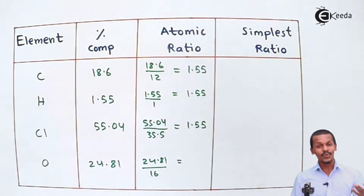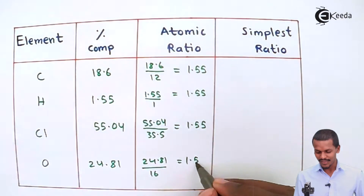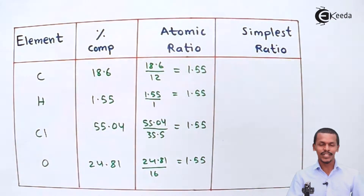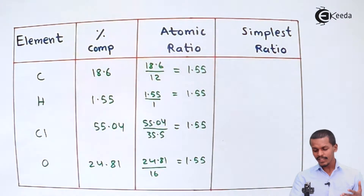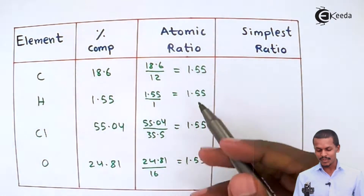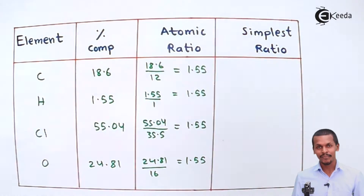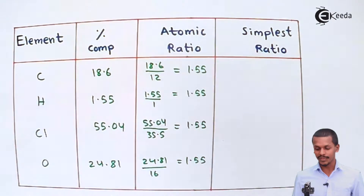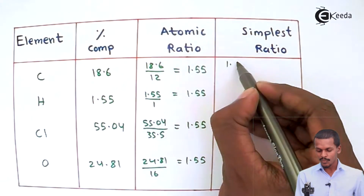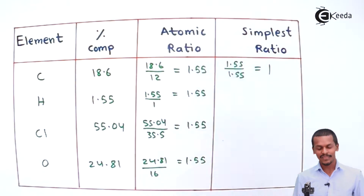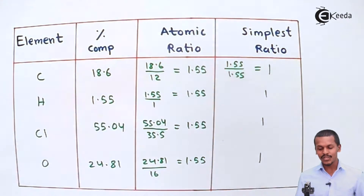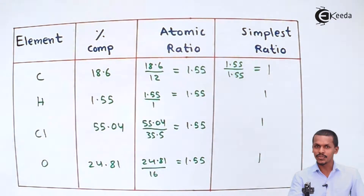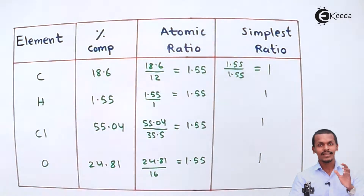Since the atomic ratio for all elements is 1.55, the smallest atomic ratio is 1.55. To find the simplest ratio, we divide each atomic ratio by the smallest value, 1.55. So 1.55 ÷ 1.55 = 1 for each element — carbon, hydrogen, chlorine, and oxygen all give a simple ratio of 1.